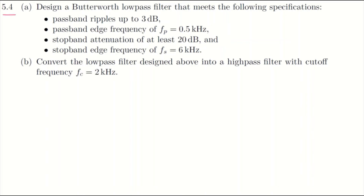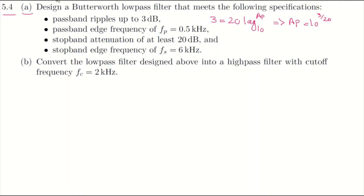Okay, question 5.4, let's focus on part A first. We're going to design a Butterworth low-pass filter that meets these specifications. The first specification is the passband ripple — the passband ripple is up to 3dB. That means 3dB equals 20 times log base 10 of ap, the passband ripple. So ap equals 10 to the power of 3/20, which is almost equal to the square root of 2.